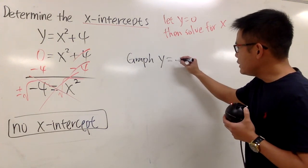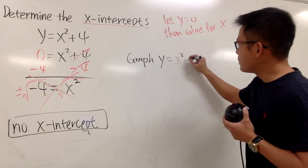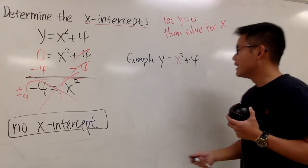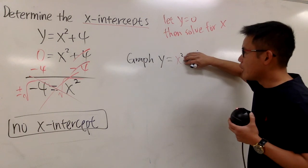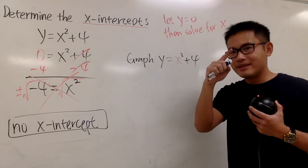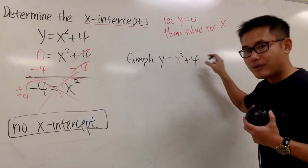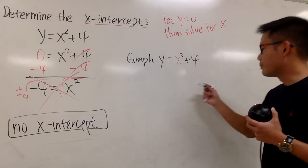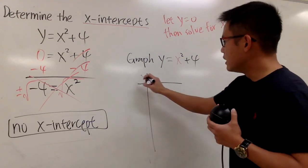When you graph y = x² + 4, notice there's no b term at all. The graph of x² is the standard one, and when you add 4 to it, you shift the graph up 4 units. I'll make a quick table for you.